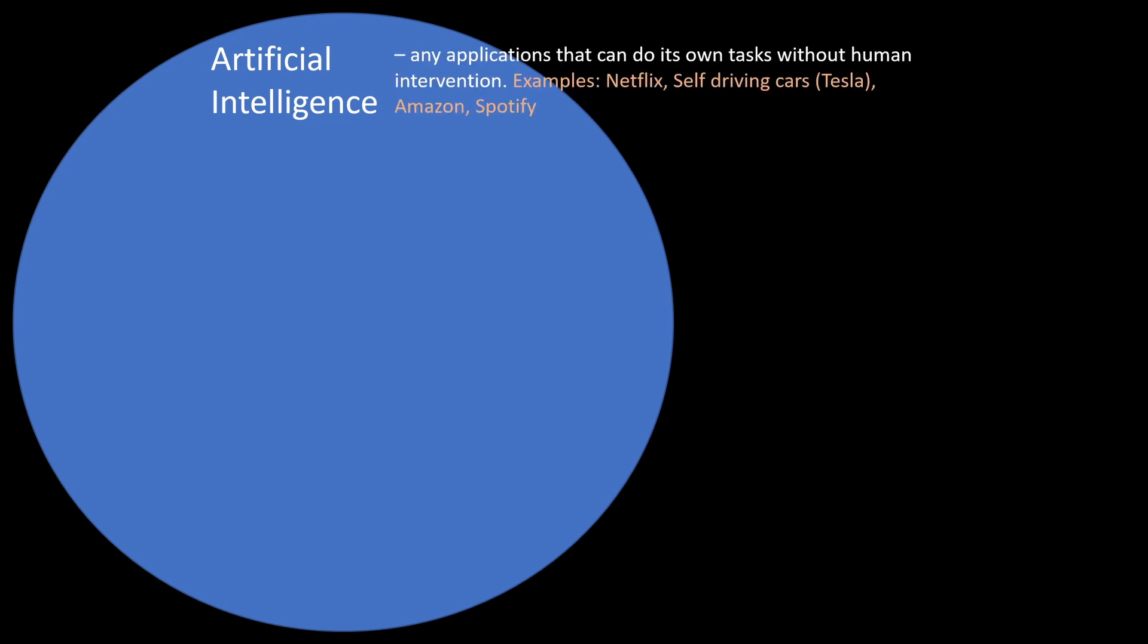Artificial intelligence is basically any applications that can do its own tasks without human intervention. So we have Netflix, for example. Netflix recommends shows to you based on your previous shows that you have watched.